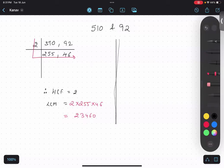Is that thing clear? Another way is you find out the prime factors of both. 510 equals 2 times 3 times 5 times 17, and 92 will give you 2 times 2 times 23.